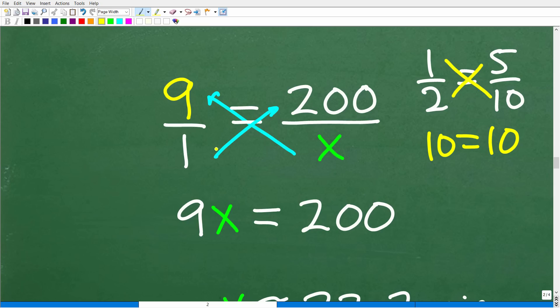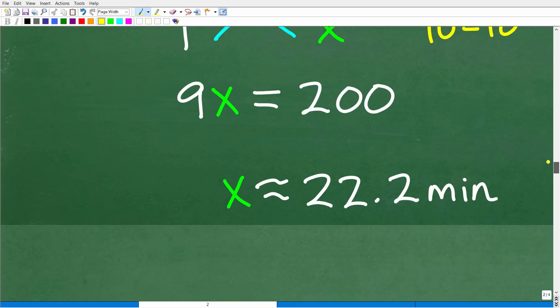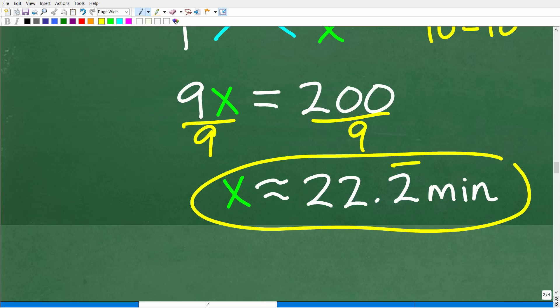So X times 9 is 9X. One times 200 is 200. And now to solve for X, super easy. All I have to do is divide both sides of the equation by 9 and then 200 divided by 9, and feel free to use your calculator, it's going to be approximately 22.2 repeating, but we'll just call it 22.2 minutes, because our units of measure is minutes. And now this makes sense.